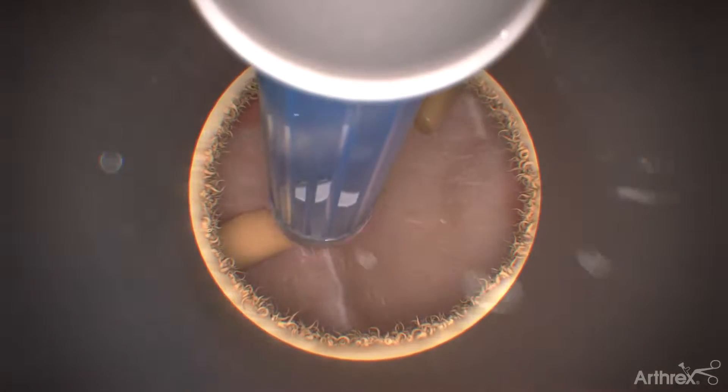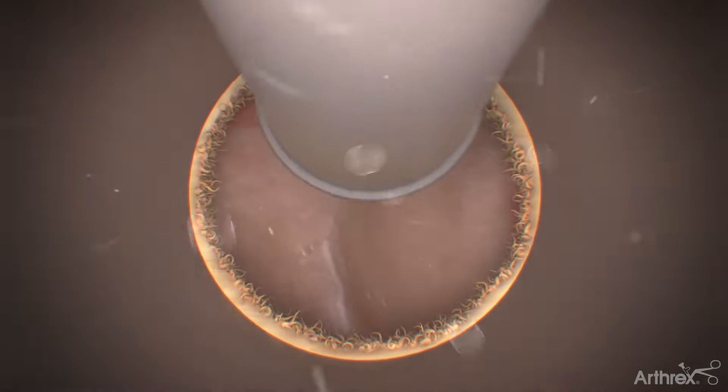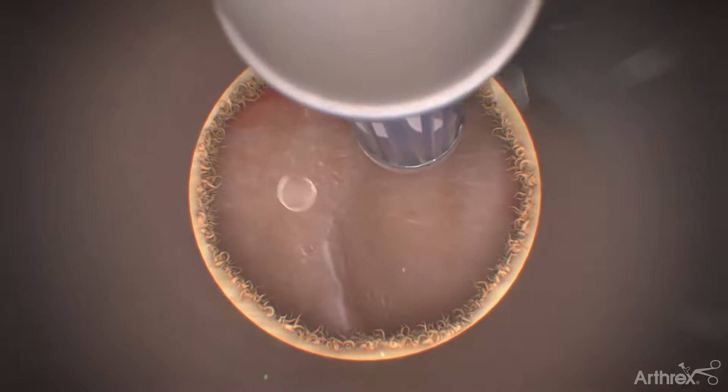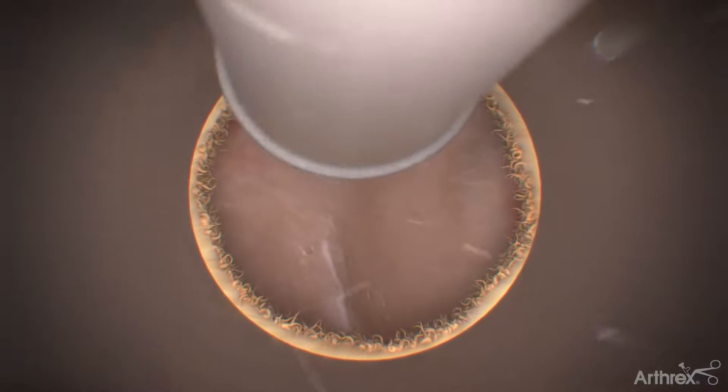Use the electrosurgical probe to treat the excised nerve endings and debride the surface of the bony anatomy continuing up towards the facet.